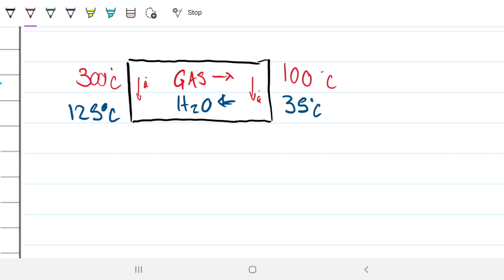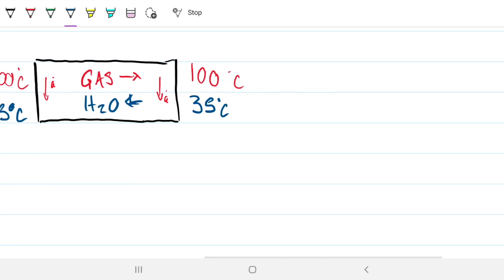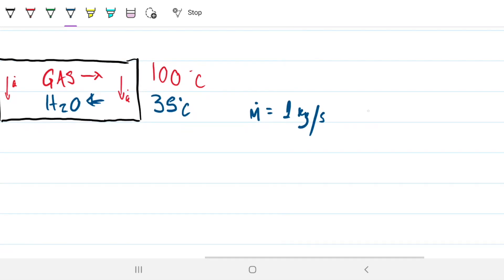Now we also have the mass flow rate of water, that's been given to be 1 kg per second. We've also been given the C sub P for water, and that is 4,200 joules per kg Kelvin. Then we have for the gas, we also have C sub P, and that's 1,000.